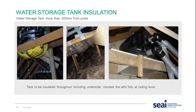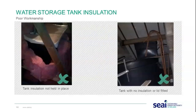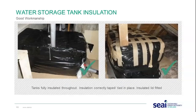For a water storage tank less than 300 millimetres from the ceiling: insulate to the side and lid, with no insulation fitted to the underside and no insulation between the joists under the tank — the quilt should be skirted up just around the underside of the tank. Where a supported storage tank is more than 300 millimetres from the joist, the tank is to be fully insulated including the underside.